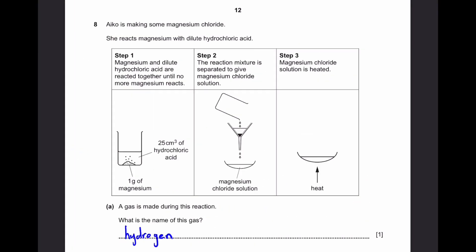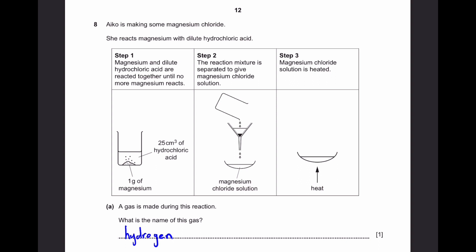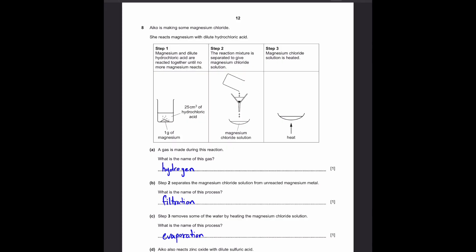We can go to question 8. Iko is making some magnesium chloride. She reacts magnesium with dilute hydrochloric acid. The three steps are given here and also shown in diagrams. Part A: A gas is made during this reaction. What is the name of this gas? Well, if we react some magnesium with dilute hydrochloric acid, we'll get magnesium chloride plus hydrogen. Because hydrochloric acid has hydrogen, magnesium chloride does not, so we need hydrogen to be there in the equation as a product as well. So hydrogen's the answer. Part B, Step 2: Separates the magnesium chloride solution from unreacted magnesium metal. What's the name of this process? That's simply filtration. Because the unreacted magnesium metal stays inside the filter paper, the solution of magnesium chloride, or the dissolved magnesium chloride, passes through the filter paper because it's dissolved.